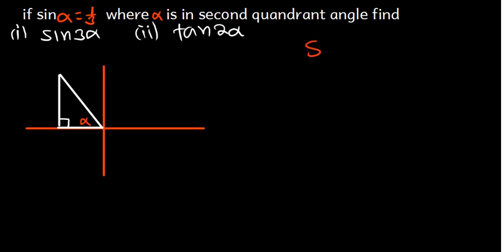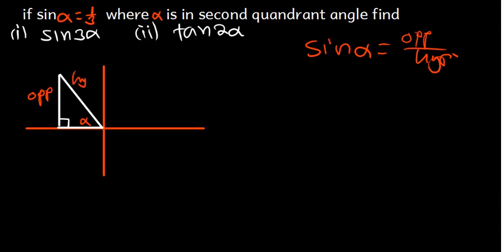We know that sine alpha equals opposite over hypotenuse. This is our opposite, this is our hypotenuse, and this is our adjacent. Since sine alpha = 1/3, the opposite is 1 and the hypotenuse is 3. Let's label the sides A, B, and C so we can find the adjacent.